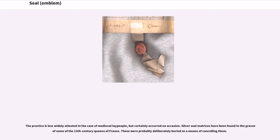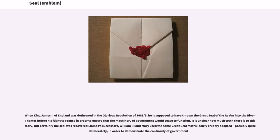The practice is less widely attested in the case of medieval laypeople, but certainly occurred on occasion. Silver seal matrices have been found in the graves of some of the 12th century queens of France, probably deliberately buried as a means of cancelling them. When King James II of England was dethroned in the Glorious Revolution of 1688, he is supposed to have thrown the Great Seal of the realm into the River Thames before his flight to France in order to ensure that the machinery of government would cease to function. Certainly the seal was recovered; James's successors, William III and Mary, used the same great seal matrix, fairly crudely adapted, possibly quite deliberately, in order to demonstrate the continuity of government.